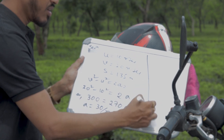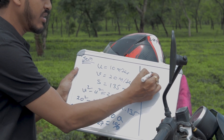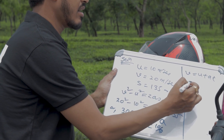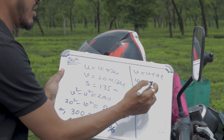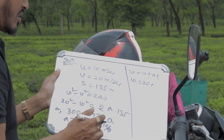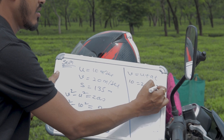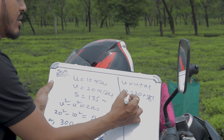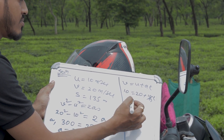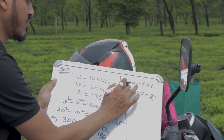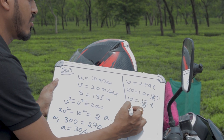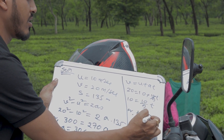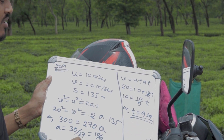Now we have to find time. Using v equals u plus AT: v is 20, u is 10, and A is 10/9. So 20 equals 10 plus (10/9)T. That gives 10 equals (10/9)T, so T equals 9 seconds. The answer is T equals 9 seconds. So this is from AIPMT 2008 — very simple.